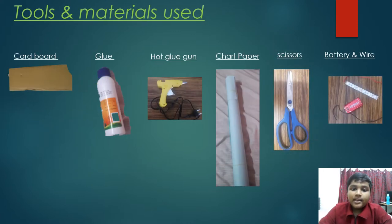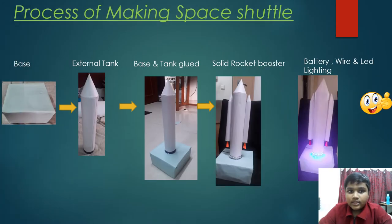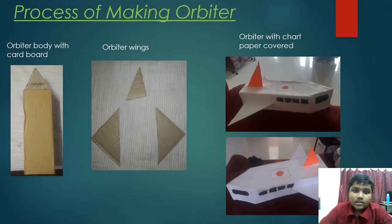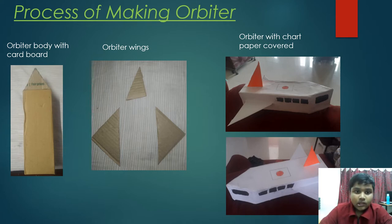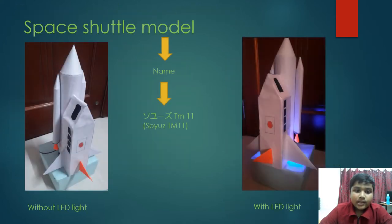Here are the tools and materials used for my project, followed by a step-by-step process of making my space shuttle. This section covers the process of making the orbiter, and shows the space shuttle model without LED light and with LED light.